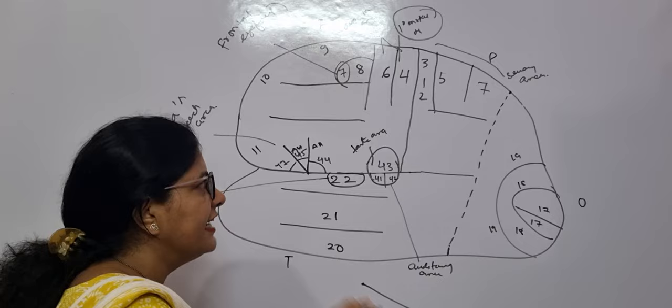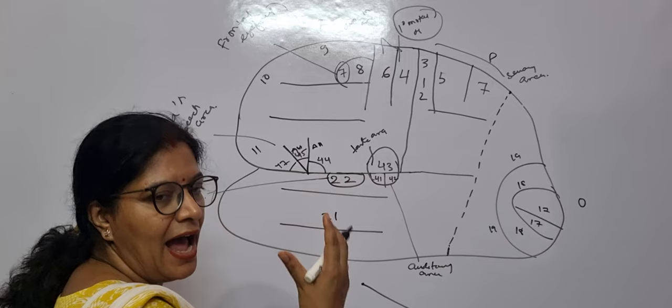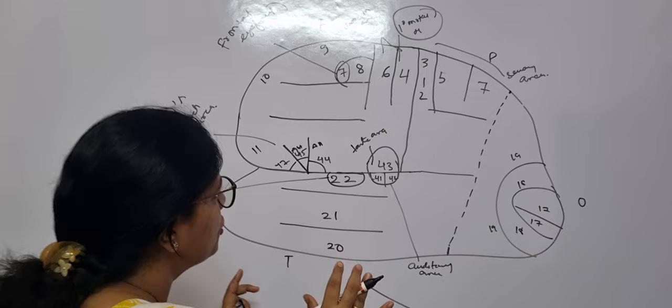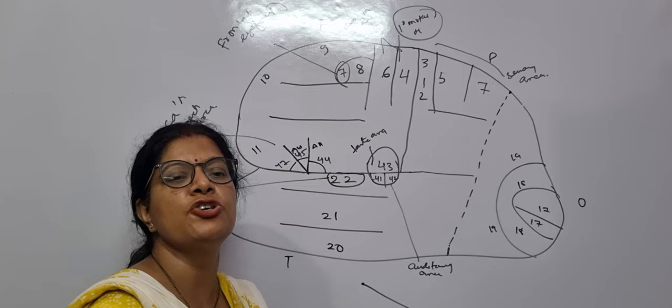And it will control what? Conjugate eye movement of both the eye balls. So both the eyes, conjugate movement. So these are in short about that Brodmann's area in this superolateral surface you are supposed to know for your exams and for the use of your exam.